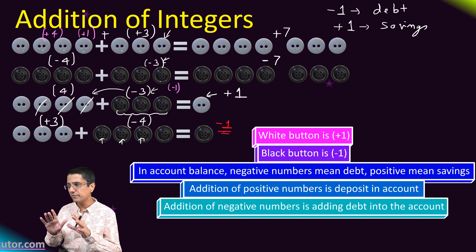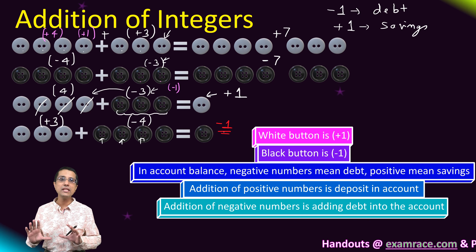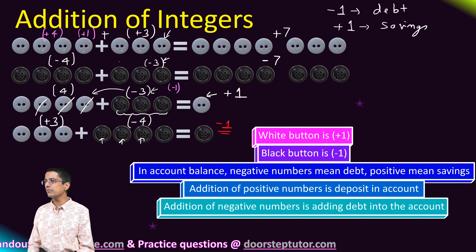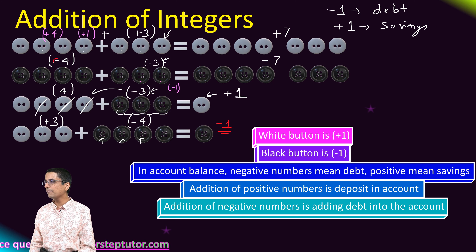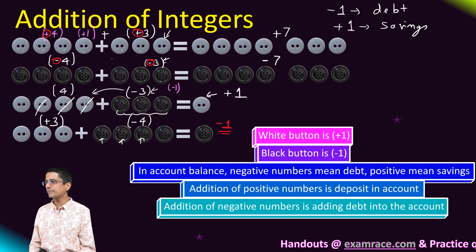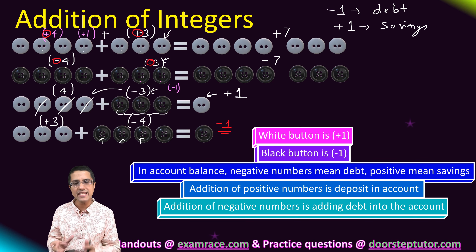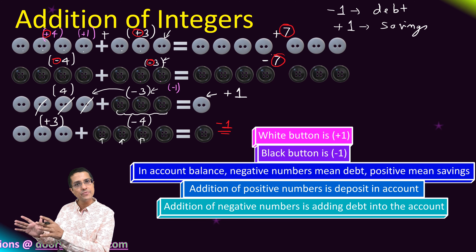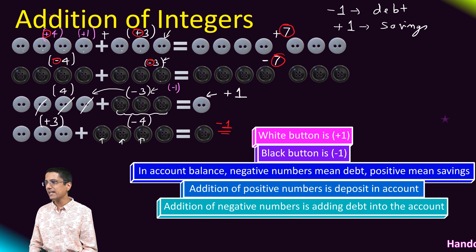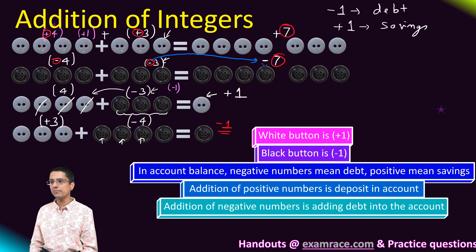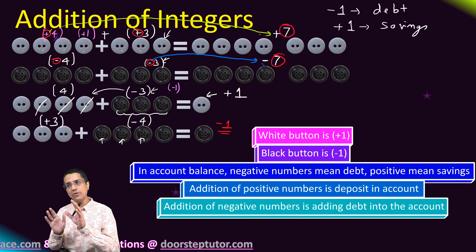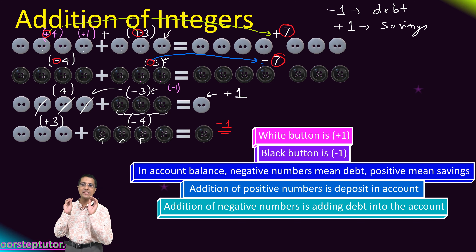Now let's derive the general rules. In the first two cases — plus four plus three, and minus four minus three — the sign of both operands is the same. When the signs are the same, we simply add the two operands and apply that common sign to the answer. Adding two negatives gives a negative answer; adding two positives gives a positive answer.